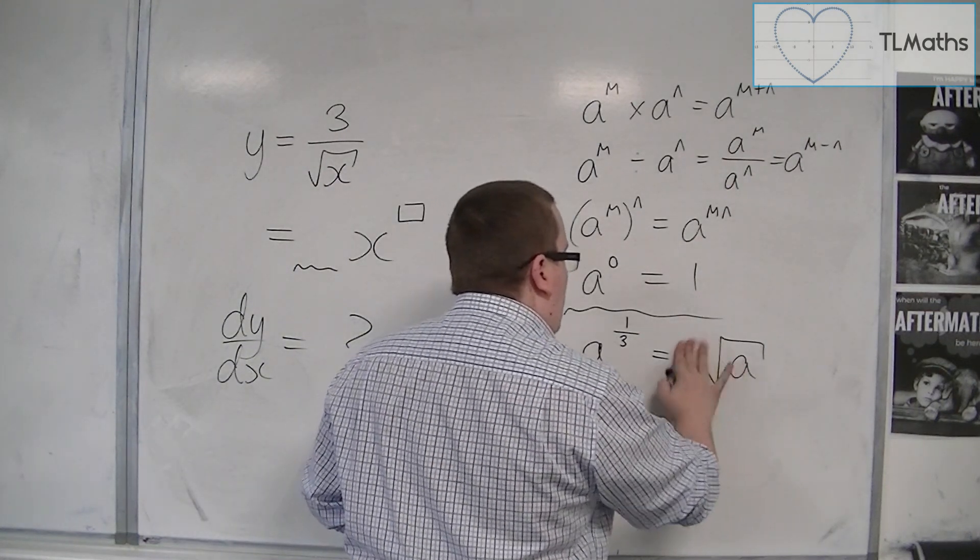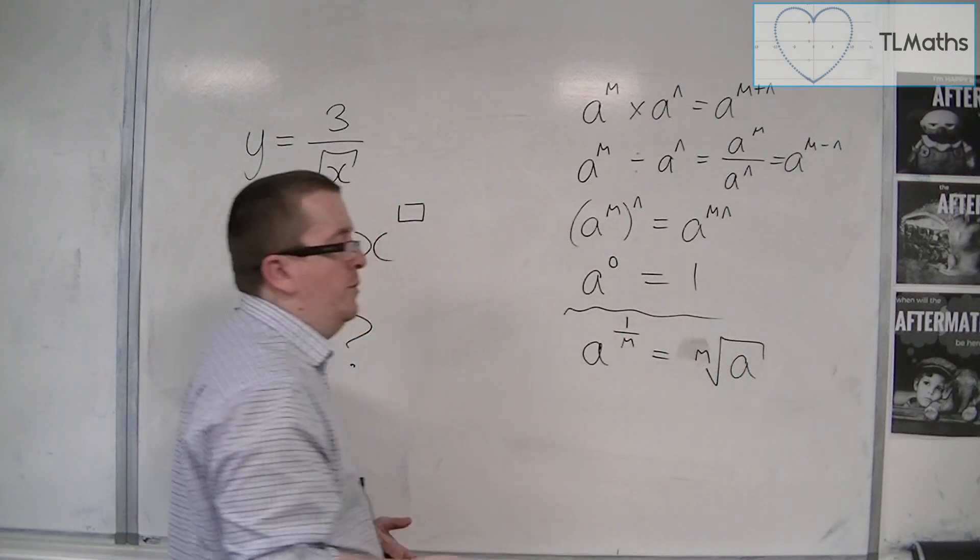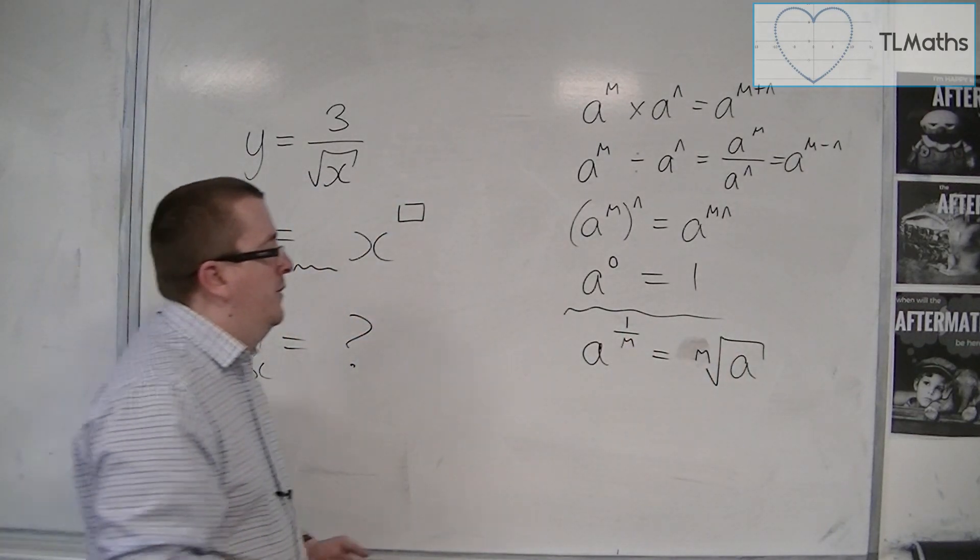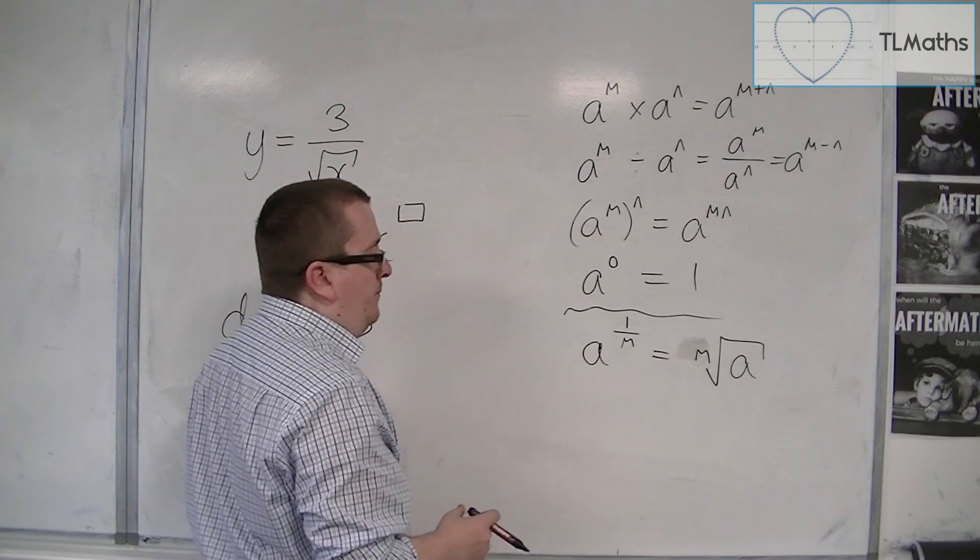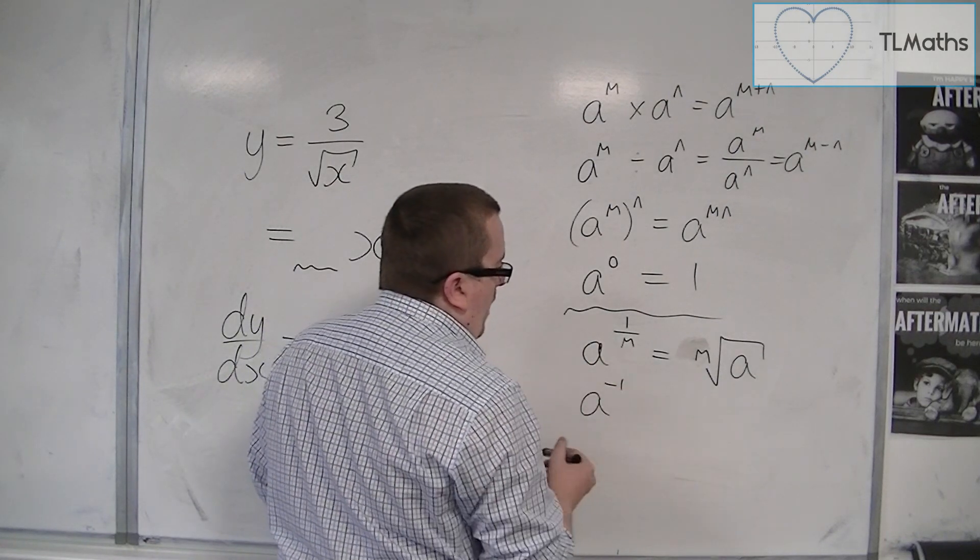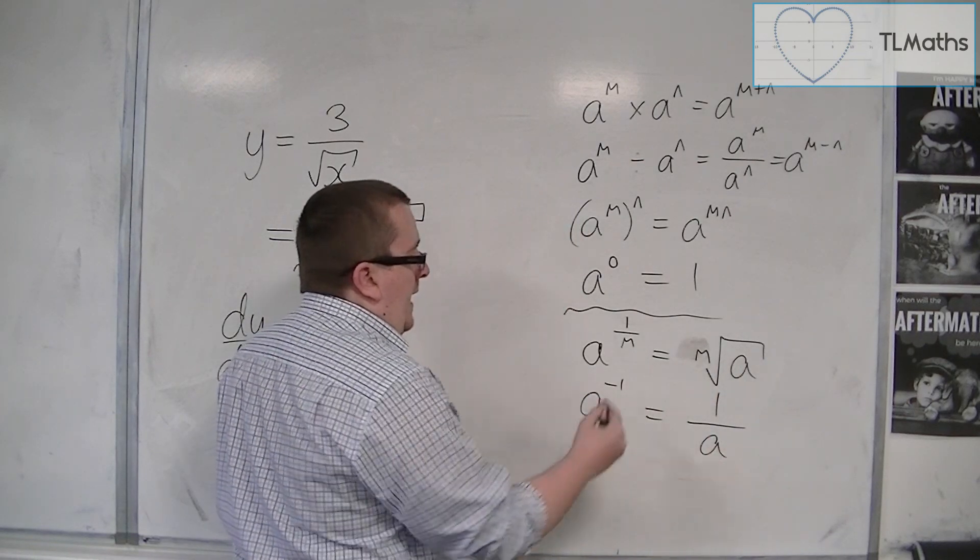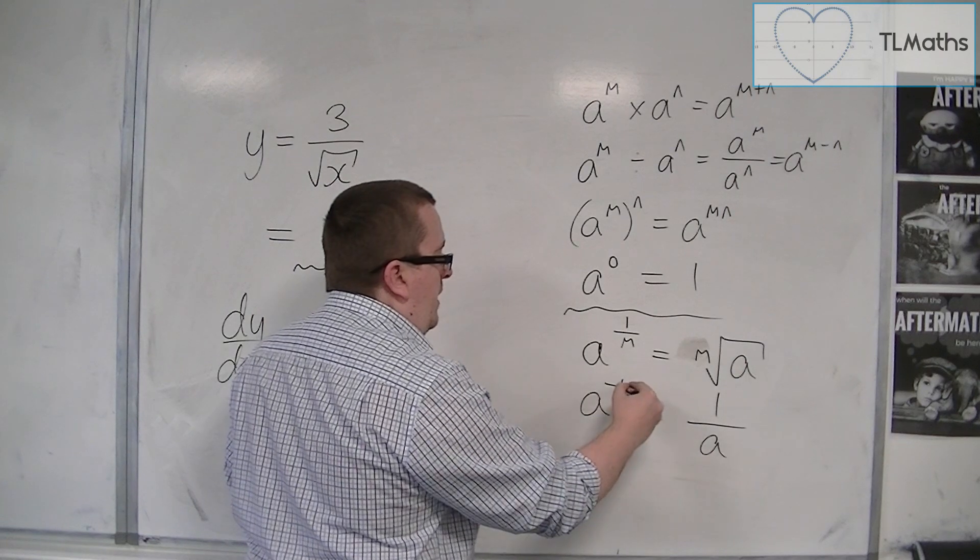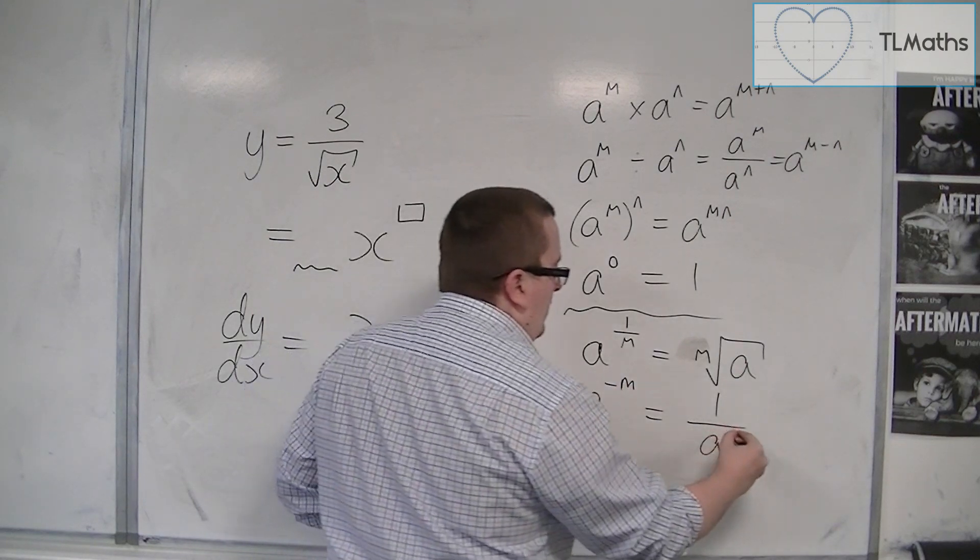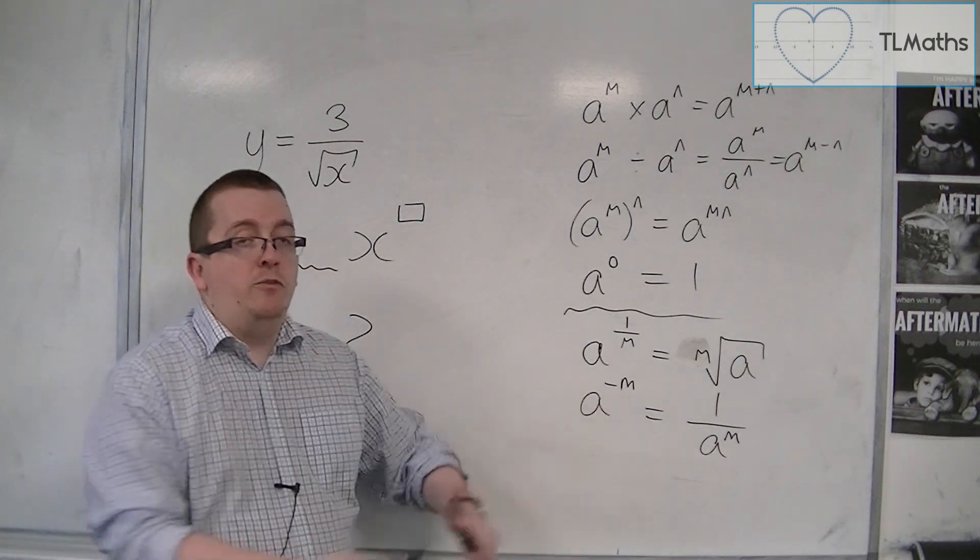So that allows me to simplify ones with a cube root or fourth root or whatever to write it as a fractional index. If you have a to the minus 1, then that's 1 over a. And if I now write that as a to the minus m, then that's 1 over a to the m. So that minus sign in the index means 1 over.